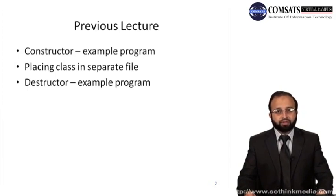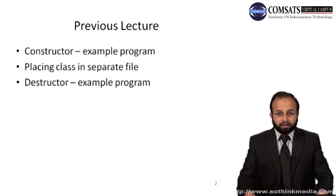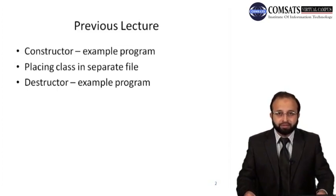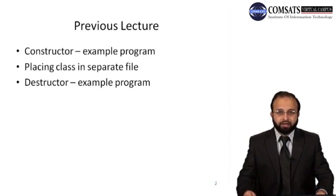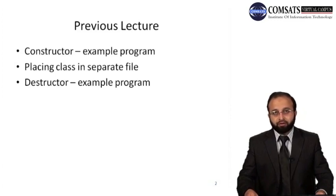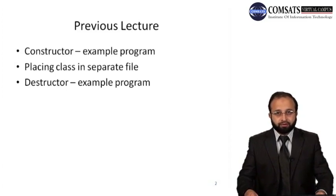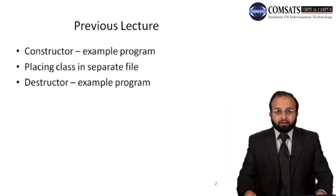The user does not need to call them explicitly, unlike other member functions of the class which the user calls themselves. Implicitly means they are automatically called. So the constructor is called when the object is created, and the destructor is called when the object is destroyed. Object destruction happens, for example, when a function finishes execution.